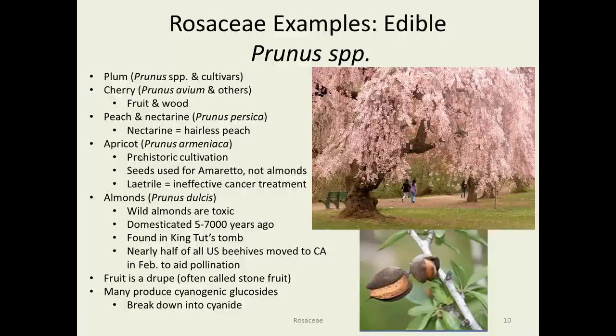Beekeepers, including those in Iowa, load their hives and truck them to Texas for part of the winter to offer pollination services there, then head to California during the almond blooming period, then home for summer. This gives beekeepers a product year-round for income. However, there are issues in that it's a great way to spread diseases all across the United States.